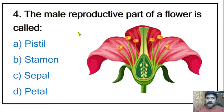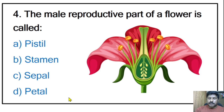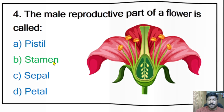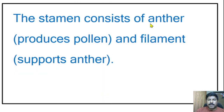Fourth question: the male reproductive part of the flower is called pistil or stamen? The correct answer is stamen. The stamen consists of the anther — that is the round part — and the filament — that is the elongated part.